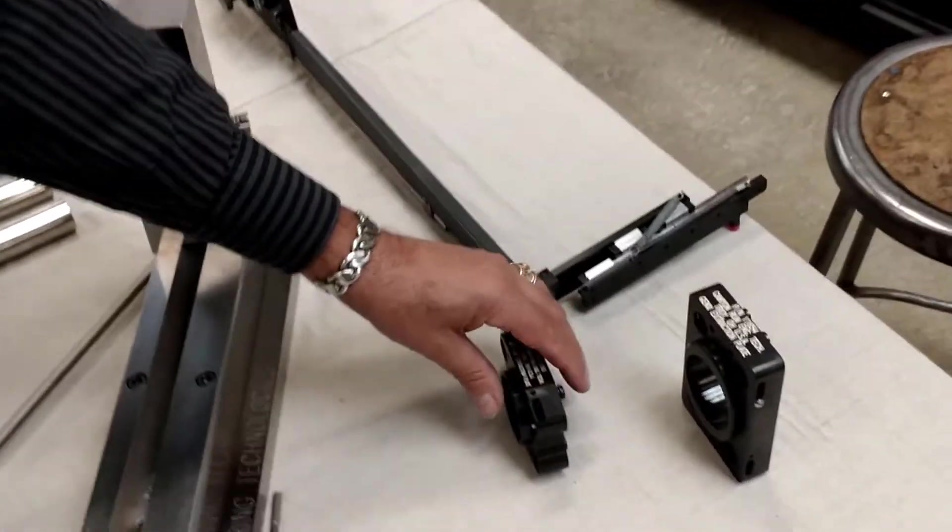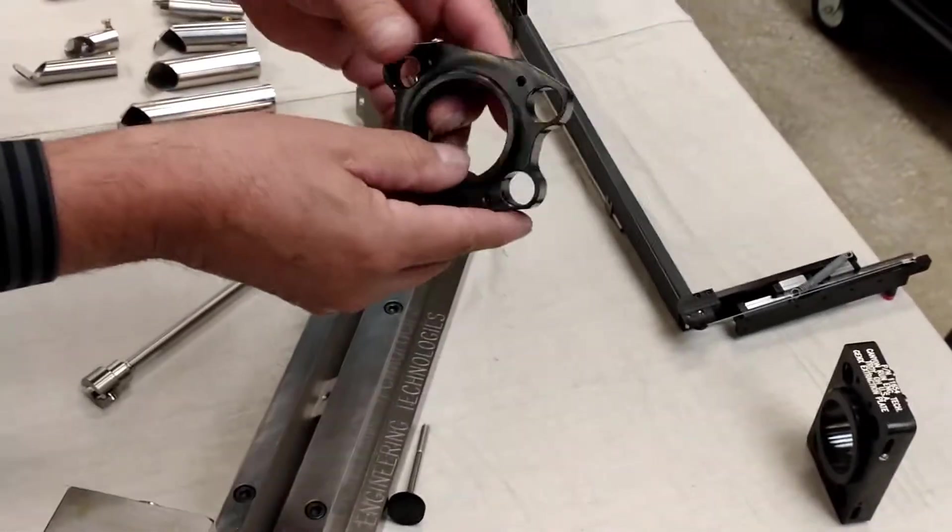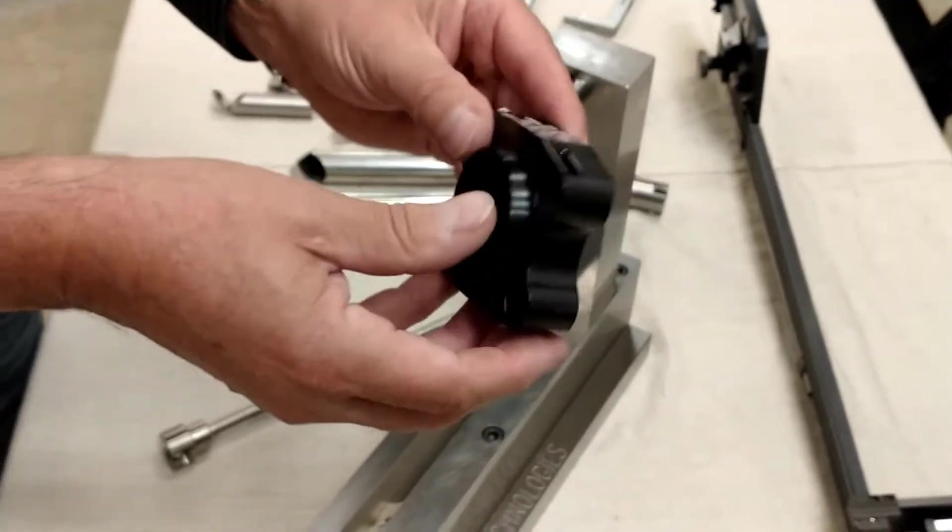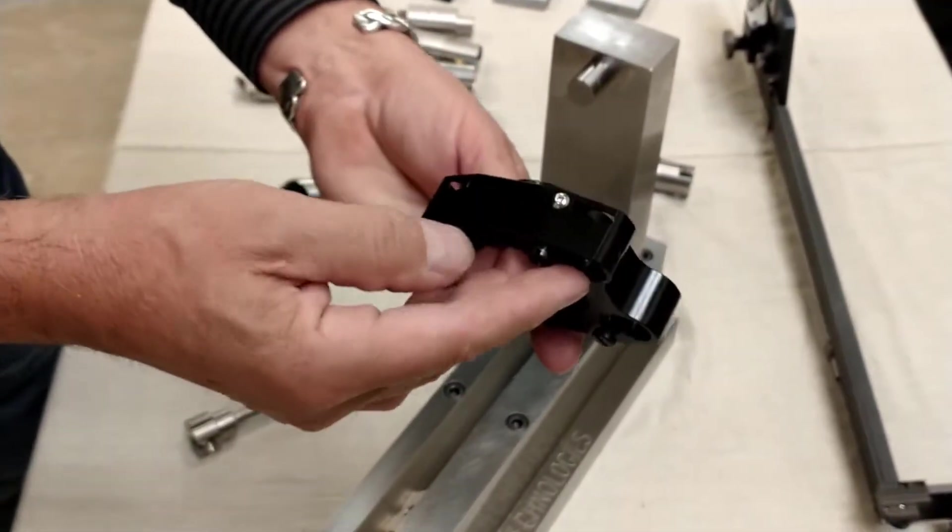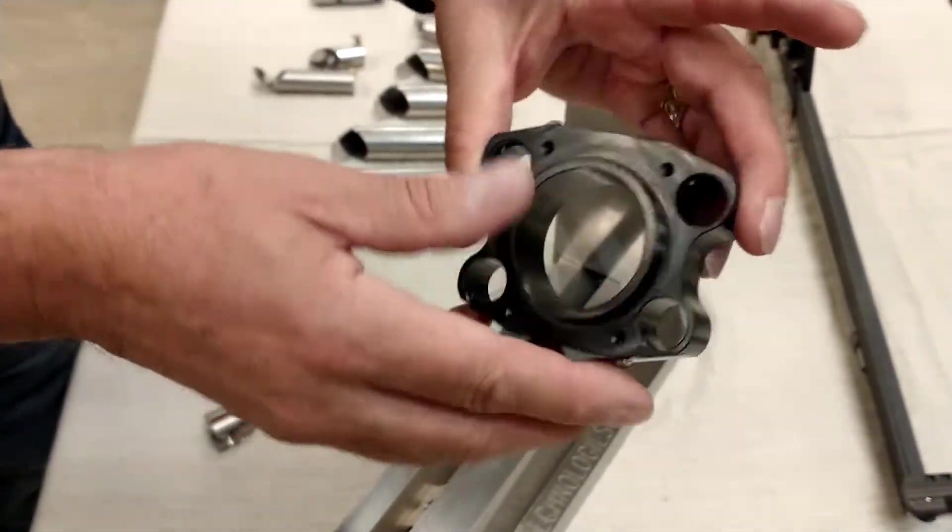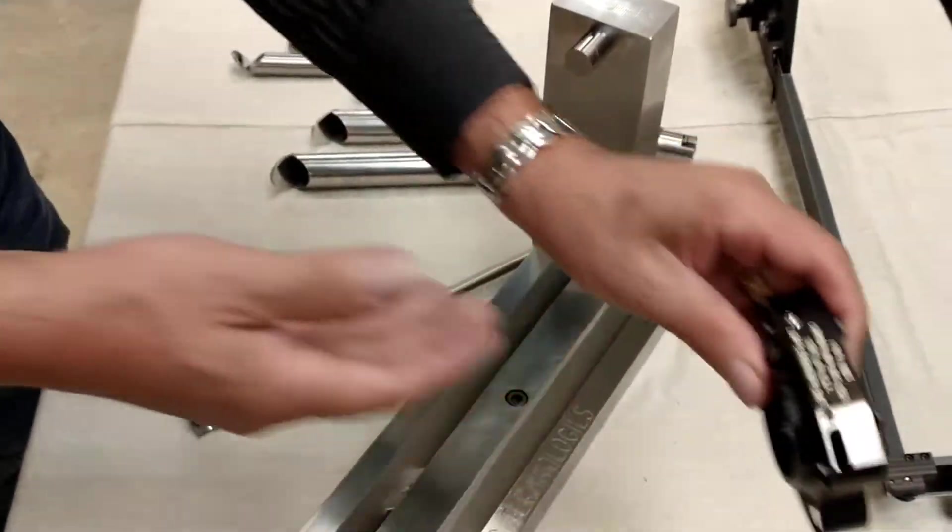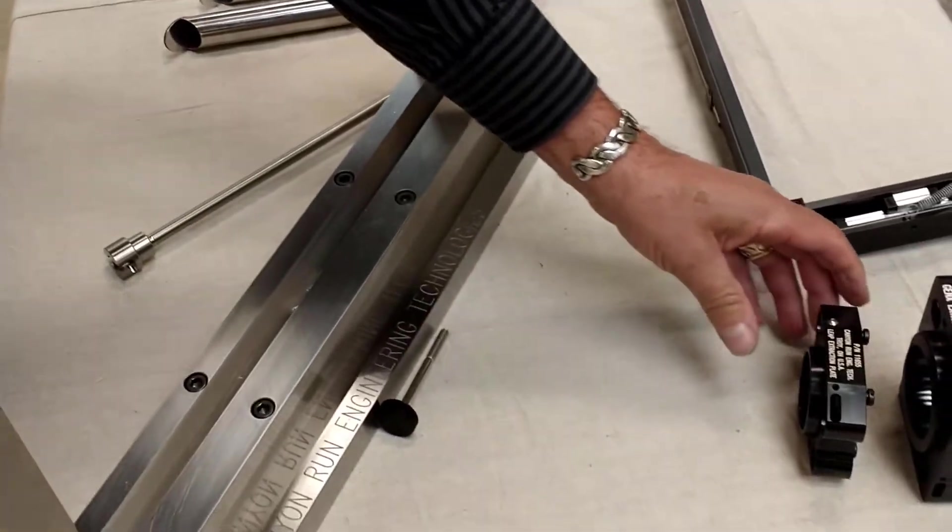This is some spare tooling that we had for a grilling fixture for the engines, but I mainly brought these out just so you can see the quality of the machine work that we typically do here at Canyon Run.